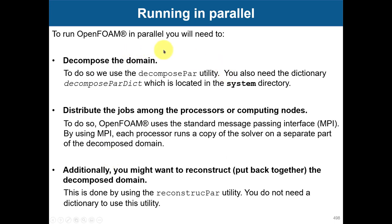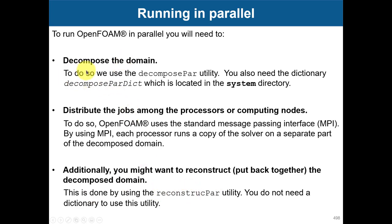To run OpenFOAM in parallel, you need to follow three basic steps. First, decompose the domain: you need to split the domain into different chunks that each processor will solve, using the command `decomposePar`. You decompose the domain for the number of processors you want to use, defined in the `decomposeParDict` dictionary. Second, distribute the jobs among the processors or computing nodes using MPI — this is what `mpirun` does automatically. Third, and optionally, put everything back together using `reconstructPar` — this is only needed for post-processing but is not compulsory.